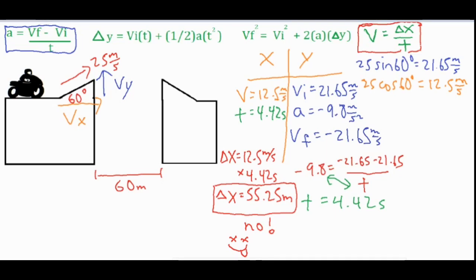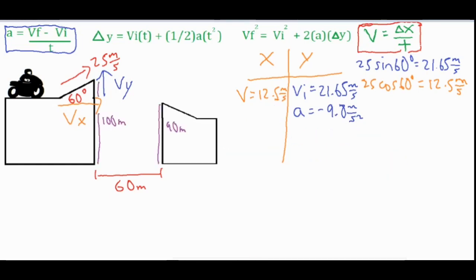Okay, so for our second scenario it is going to be slightly different. Our new scenario we have the biker still taking off at 25 meters per second, still taking off at that 60 degree angle and they are 100 meters off the ground, and they're going to land on this platform that's 90 meters off the ground and still 60 meters spanning that gap right there which is a delta x that we want to see if we can exceed that to land on the second platform.